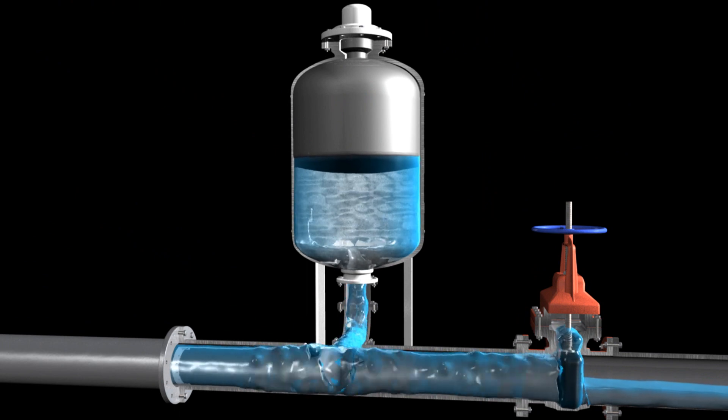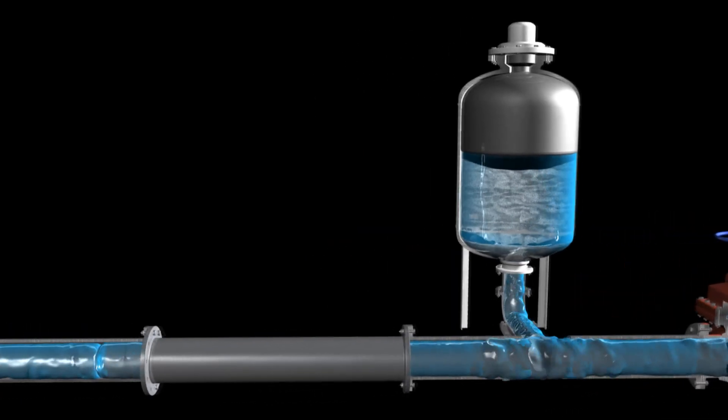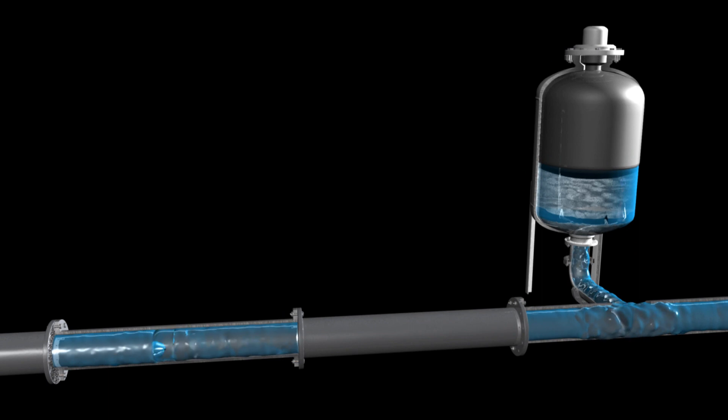With the valve closed and the pump still running, fluid now reverses flow out of the tank from the pressure in the gas filled bladder, pushing against the pump pressure.